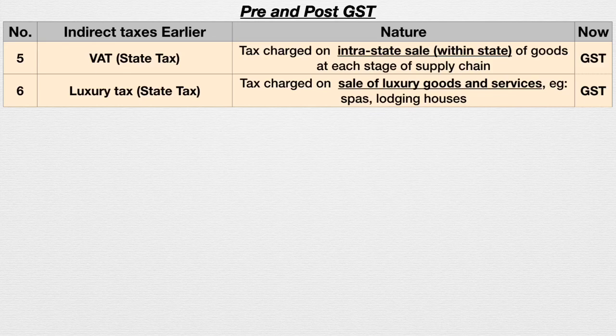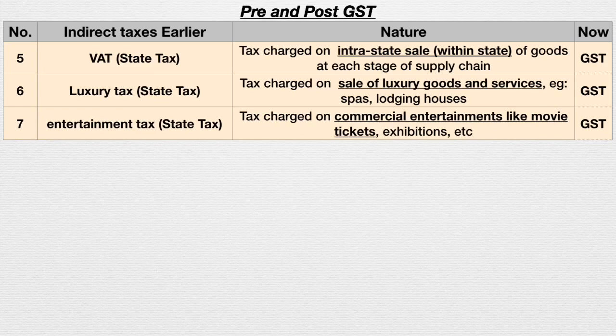Sixth is luxury tax — again a state tax charged on sale of luxury goods and services, for example spas and lodging houses. If you stay in a luxury hotel like a five-star or seven-star, the rent you pay includes luxury tax. However, luxury tax was not applicable on food items, as food is a necessity of life. Now this luxury tax has got replaced with GST.